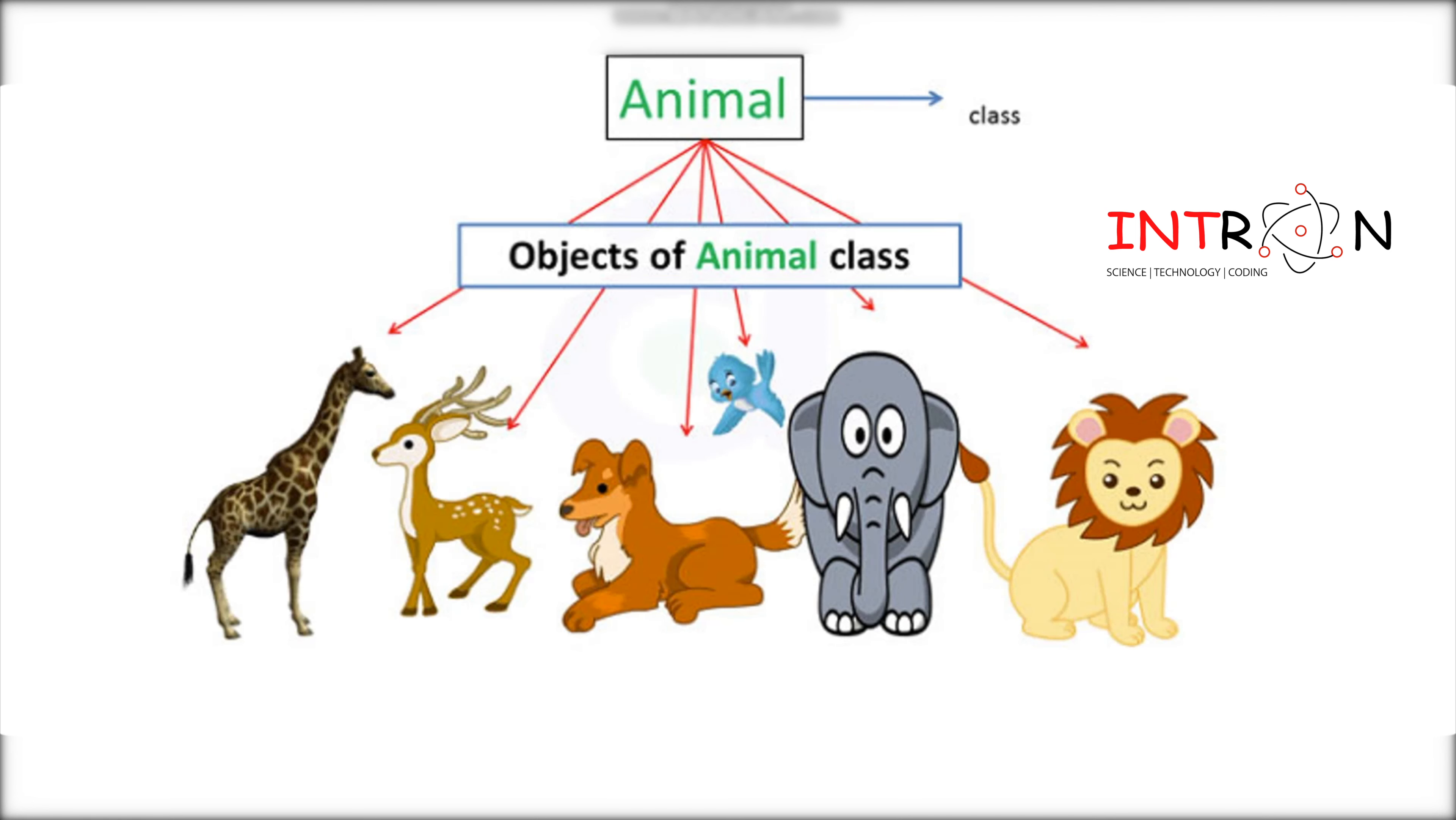Now we will go to our next example. Suppose I will consider any animal as one class. What are the different objects? What are the different types of animals that come under that particular object? Giraffe, deer, dog, elephant, lion. These are all the objects of animal class.